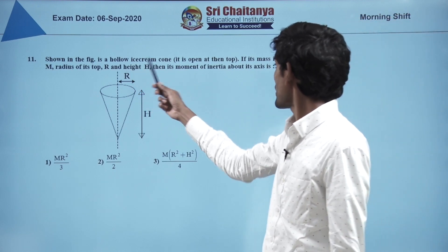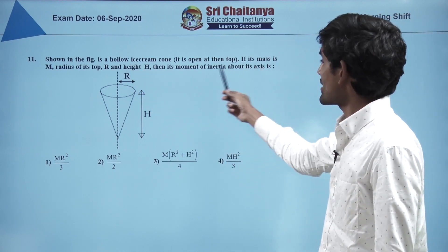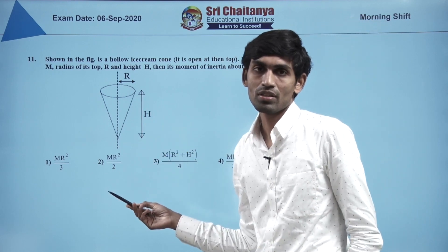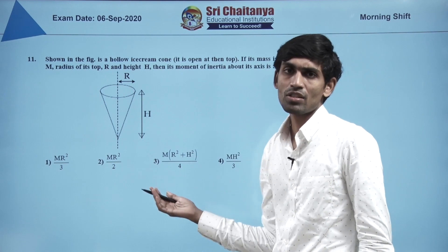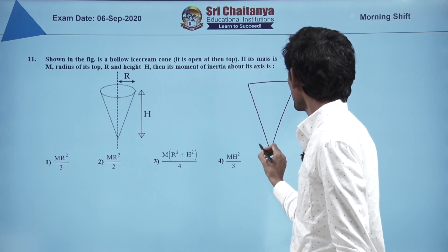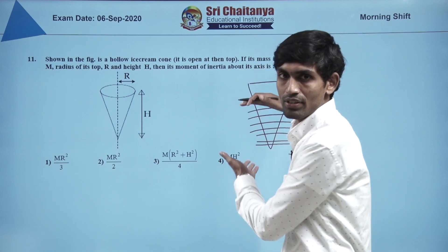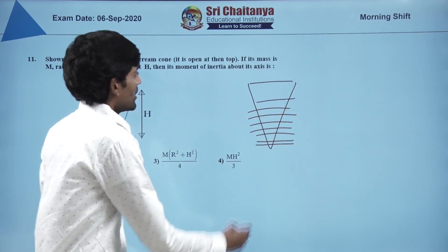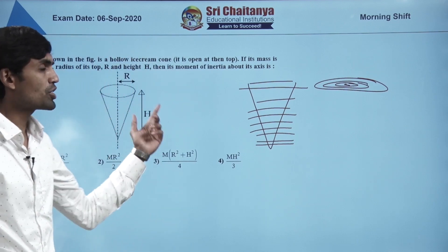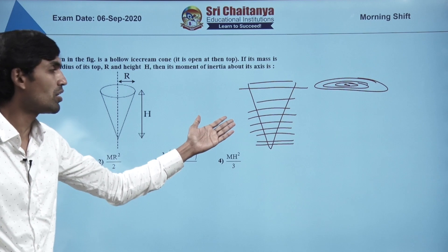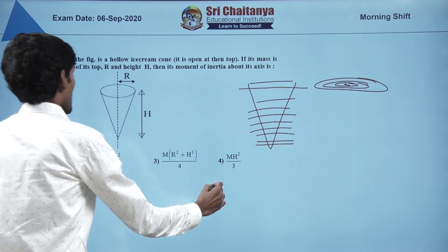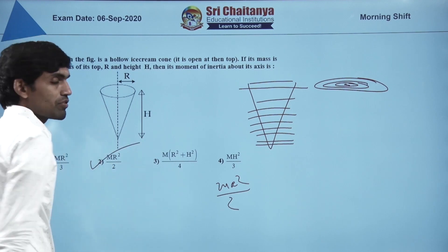A hollow ice cream cone, open at top, mass m, radius r, height h — its moment of inertia about its axis. If you cut a hollow cone and collapse it flat, it becomes a disk made of many rings. So the moment of inertia equals that of a disk: I = mr²/2. The correct option is the second option.